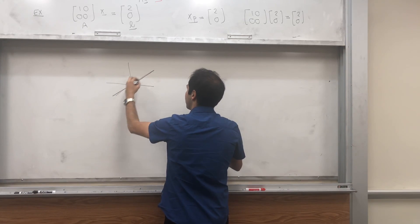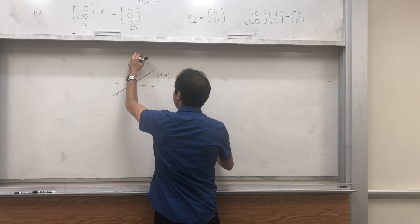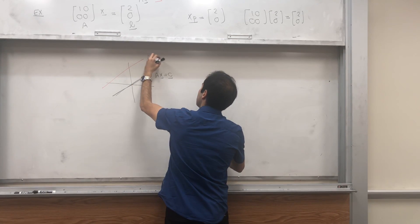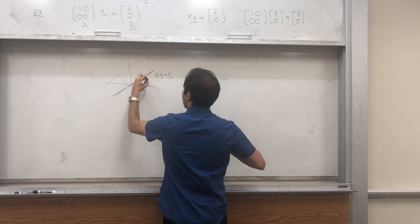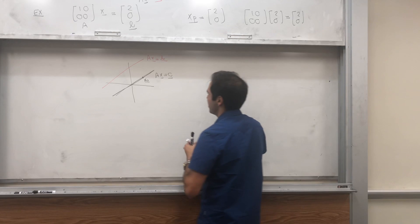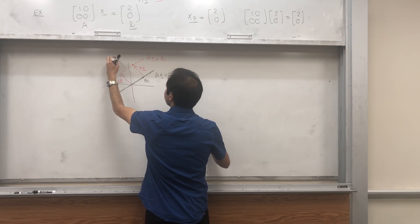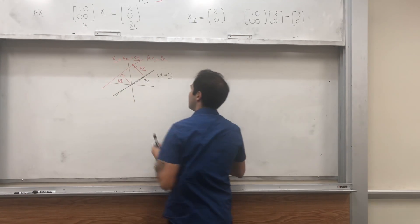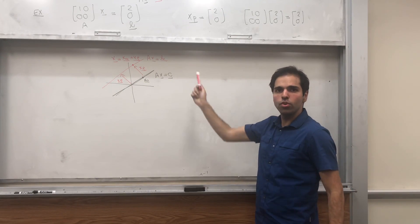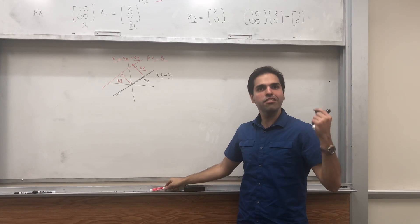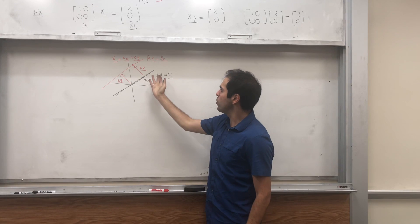Suppose x0 is the solution set of Ax equals 0. Then this theorem says to solve Ax equals b, you just take the solutions of Ax equals 0 and translate them by the particular solution xp. Because we know x equals x0 plus xp. This is super interesting — it tells us that solutions of Ax equals b are, geometrically, either the empty set or of the same geometric nature as Ax equals 0.